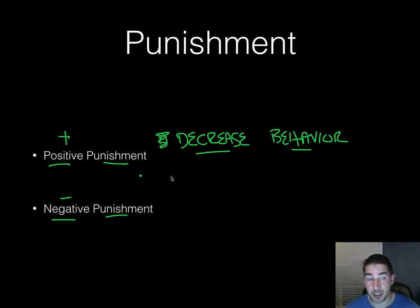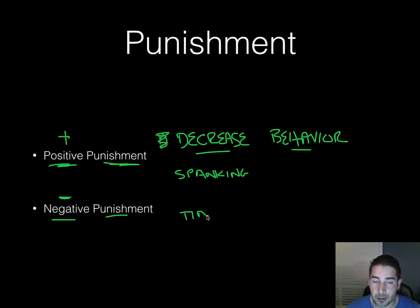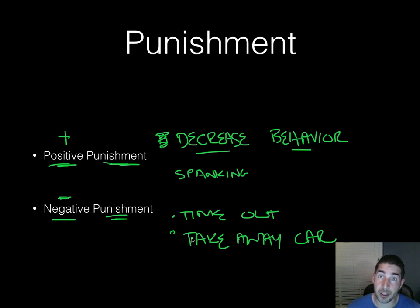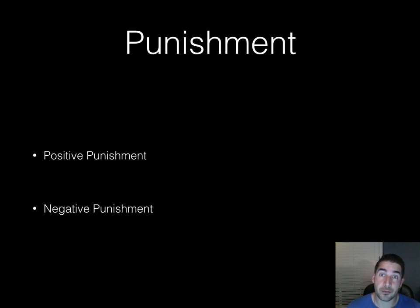Positive punishment — a clear example is spanking. You're adding an aversive stimulus, adding pain; they don't want that to happen, so hopefully they stop the behavior. Negative punishment means you're taking something away — like a timeout, where you're taking away the child's playtime, or taking away a teenager's car. By taking something away, you decrease the behavior. Research shows punishment tends to work less well than reinforcement, so it's better to reinforce good behaviors.